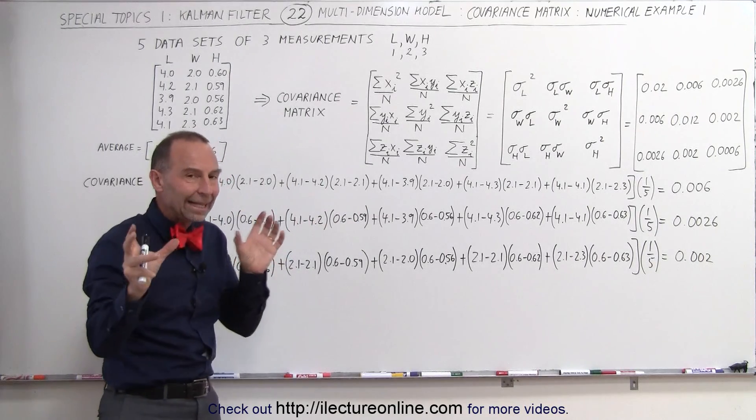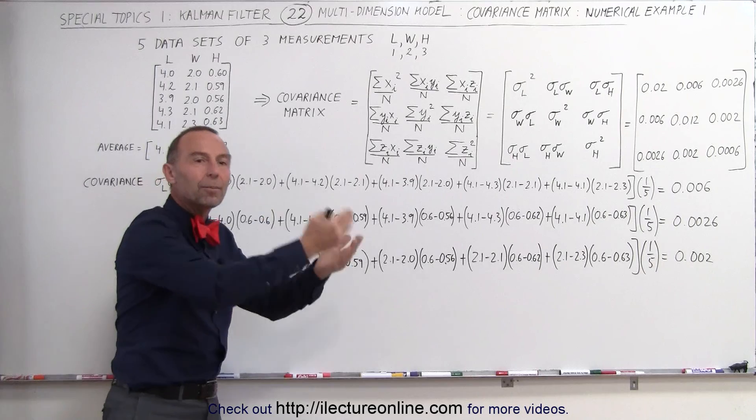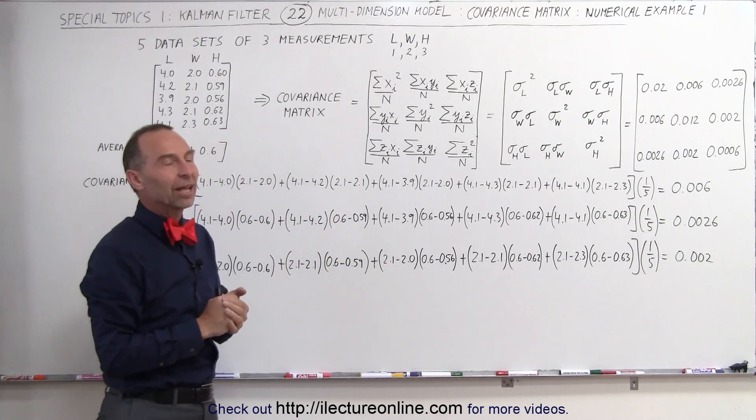We will take predicted values of the next state for the position, velocity, and acceleration, and the Kalman gain will adjust how much of each we will take to then update the predicted value for the next state.